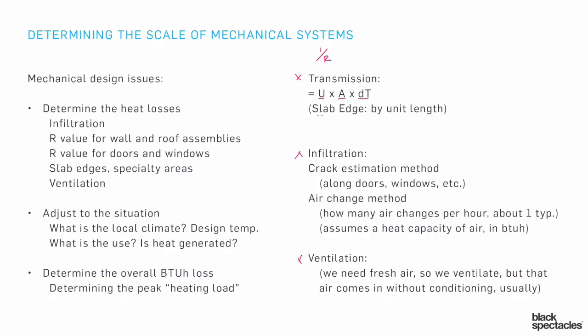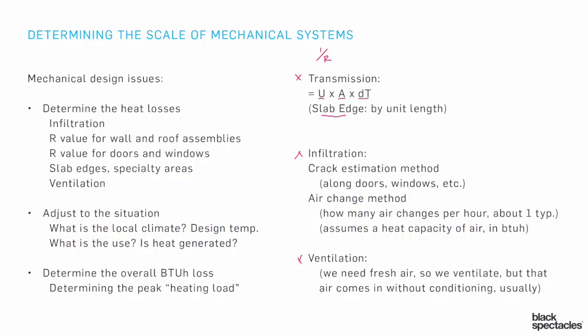Most of this is done by area — by different wall assemblies, floor assemblies, and roof assemblies. But there are a few exceptions, like slab edge, where it's done by unit length. The way heat is lost from a slab on grade is through the edge of the slab, so you multiply a unit length number times the actual perimeter distance around that slab. Not everything falls exactly into the area-per-square-foot situation, but most of it does. Adding up all those numbers gives us our total heat loss for transmission in BTUH.